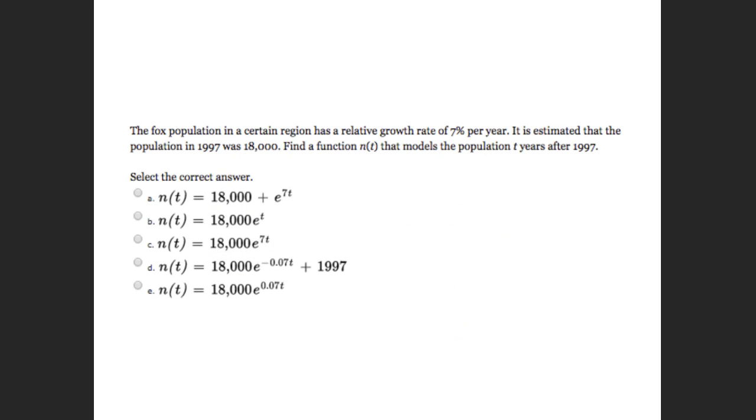Problem number two. It says a fox population in a certain region has a relative growth rate of 7% per year. It is estimated that the population in 1997 was 18,000. Find a function N of T that models the population T years after 1997. Letter E. You both agree with letter E. So if I was going to write this down, the initial population is 18,000. It looks like they're using the PERT formula, so I'm just going to go E. The rate is 7%. Well, 7% as a decimal is 0.07, so I've got 0.07 to the T. I would agree that letter E is the correct answer.